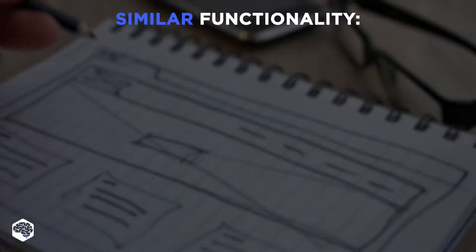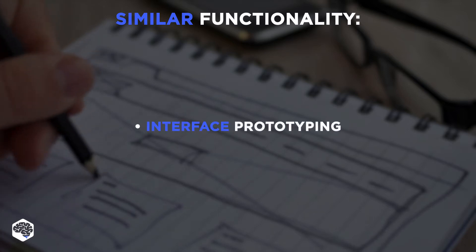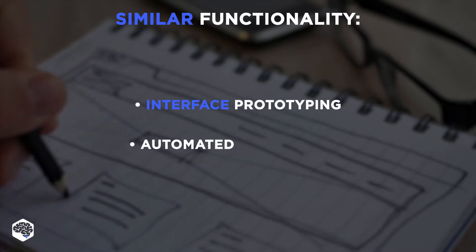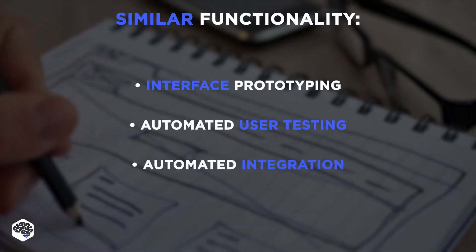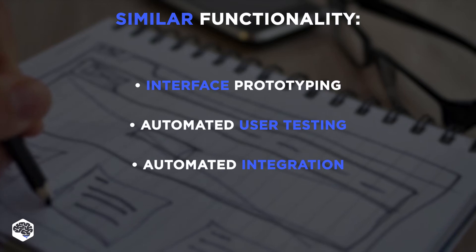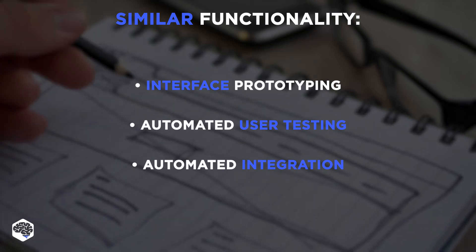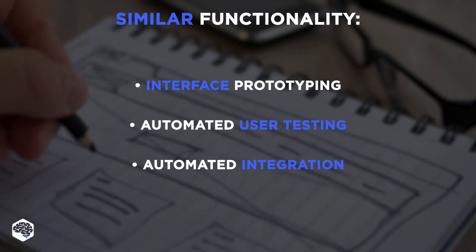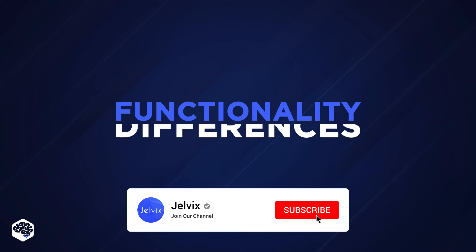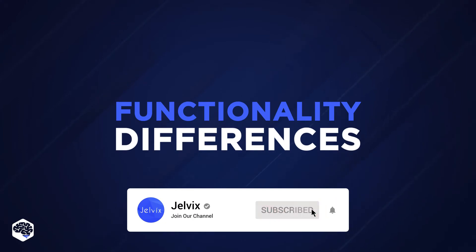The core functionalities of InVision and Marvel consist of interface prototyping, automated user testing, and automated integration with cloud services and management software. These are their similarities. But what about functionality differences between Marvel and InVision?